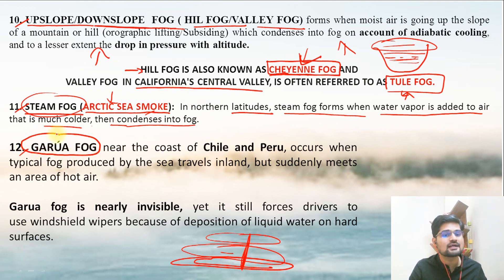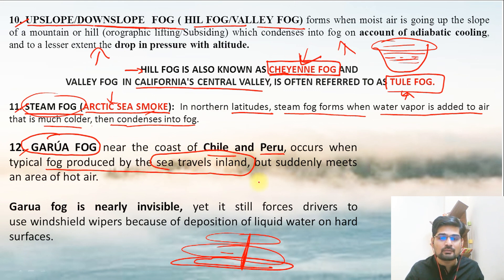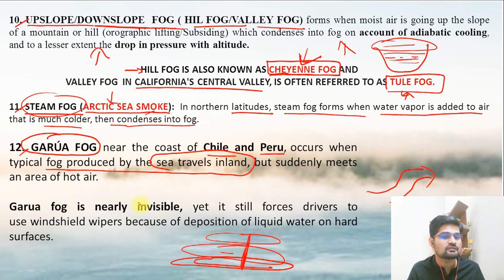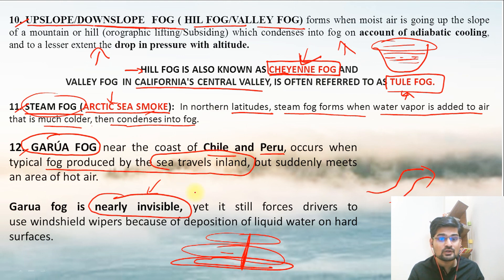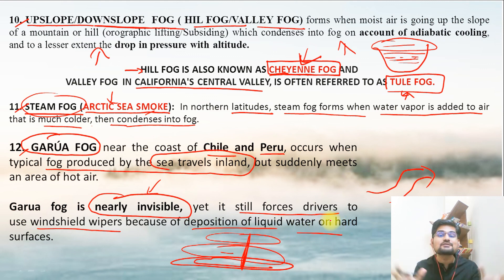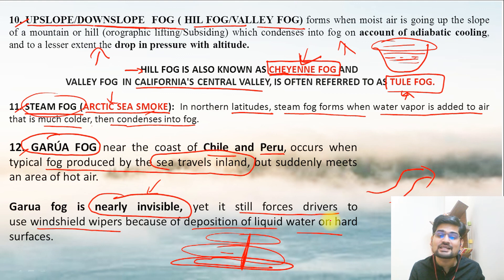The last type is Garua fog. Near the coast of Chile and Peru, this fog occurs when typical fog produced by the sea travels inland. As sea air moves inland, hot air meets cool air and fog forms. This fog is almost invisible, yet it still forces drivers to use windshield wipers because liquid is deposited on the windshield even though nothing is visible — leading to accidents. This is called Garua fog, very specific to the Chile and Peru area. Now that we have learned about fog, its formation, various types and names, in the sessions to come we'll be talking about smog formation, which is related to fog formation. Stay tuned, stay safe.